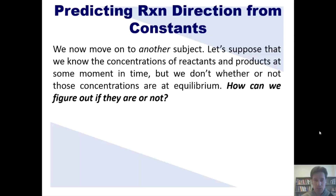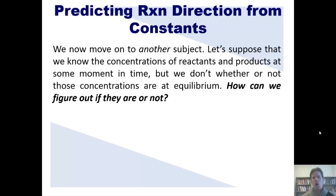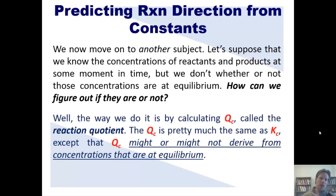I want you to imagine that we have an equilibrium reaction. With that reaction, let's suppose that we do know the concentration of the reactants and the product at some moment in time, but we have no idea whether or not those concentrations are at equilibrium. How can we figure out if this particular reaction at this moment in time is at equilibrium? Well, the way we do this is by calculating QC, which is called the reaction quotient.